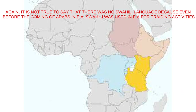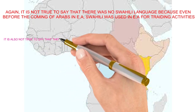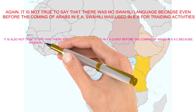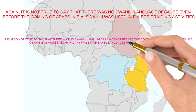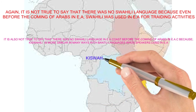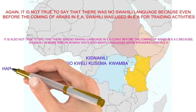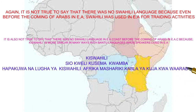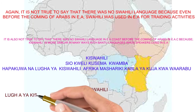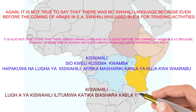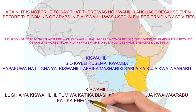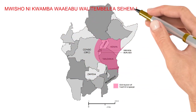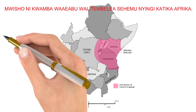Leo tunazungumzia chimbuko la Kiswahili. Katika kipindi chetu kilichopita tulizungumzia swala hili, tukataja nadharia tatu. Moja husema Kiswahili ni lugha ya Kibantu, ya pili husema Kiswahili ni lugha ya Kiarabu, na ya tatu husema Kiswahili ni mchanganyiko wa lugha za kigeni na lugha za Kibantu. Leo tunazungumzia nadharia ile ambayo inasema Kiswahili ni lugha ya Kiarabu.